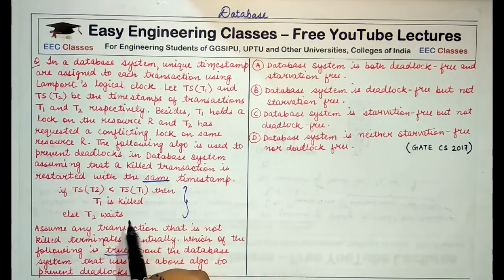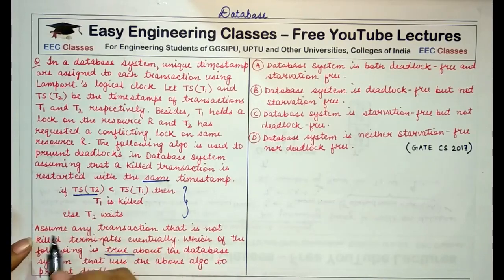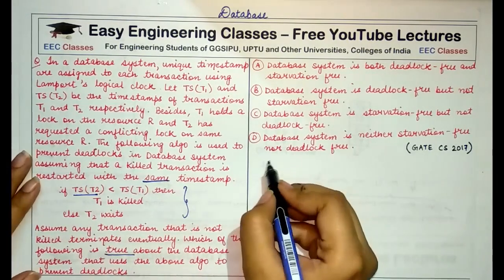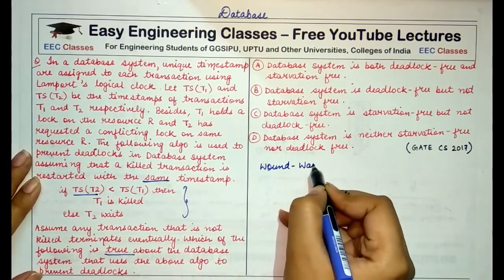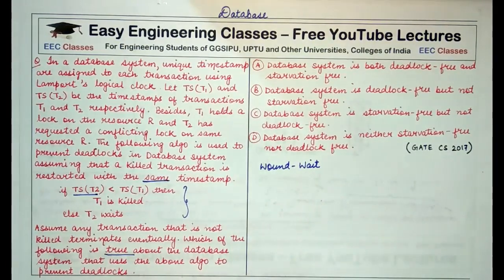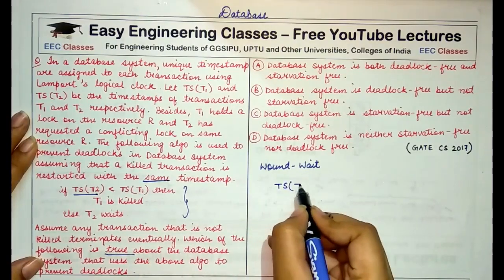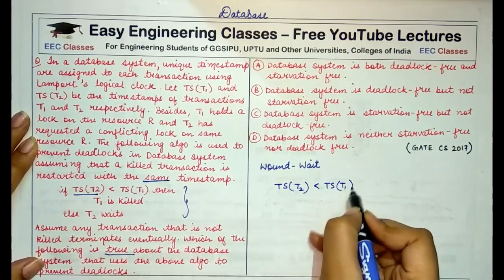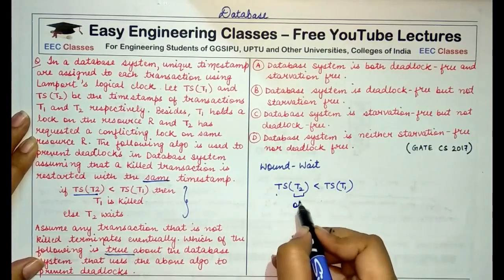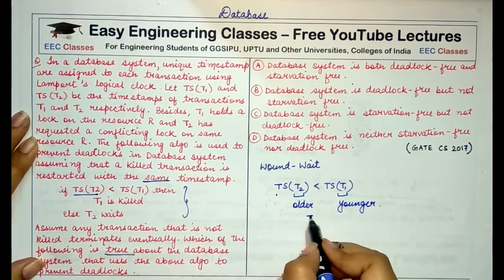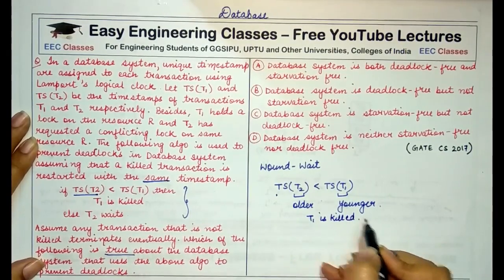When you read this algorithm, it should be clear that an older transaction will always kill or wound a younger transaction. This means this is a wound-wait scheme. In a wound-wait scheme, whenever two transactions are fighting for the same resource, the older transaction gets the hold of the resource and the younger transaction is killed. So when TS(T2) < TS(T1), T2 is the older transaction and T1 is the younger transaction.